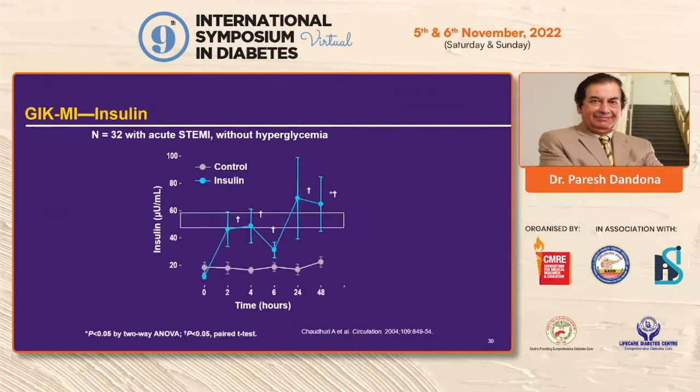Insulin concentrations increased over a period of 48 hours while patients were in the coronary care unit.